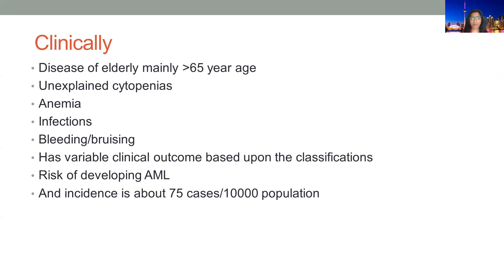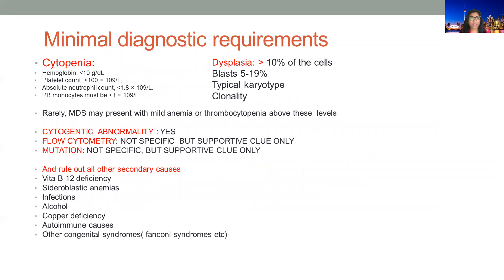Clinically, MDS is a disease of the elderly — more than 65 years of age. These patients can have unexplained cytopenias or pancytopenias, and depending on lineages involved, can have anemia, infections, bleeding, or bruising. These patients are ultimately at risk of developing acute myeloid leukemia. Clinical outcome is based on classification, cytogenetics, abnormalities, and comorbidities. The incidence of MDS is approximately 75 cases per 100,000 population.